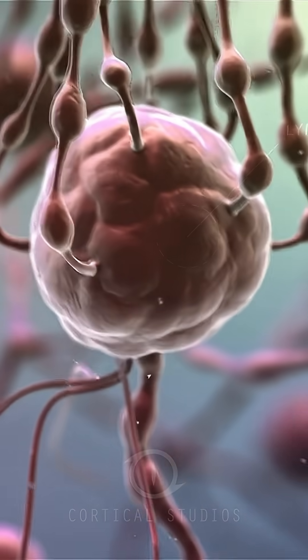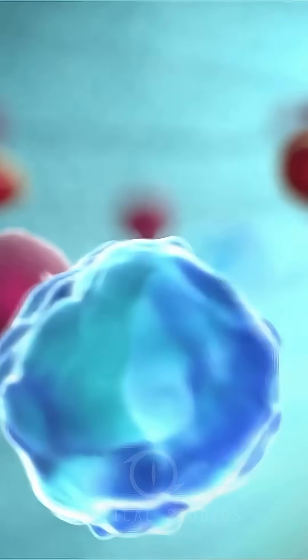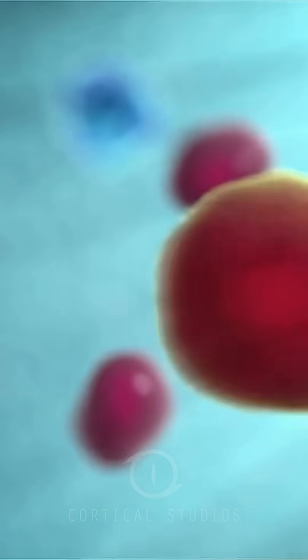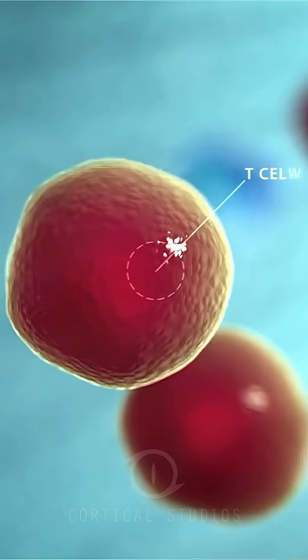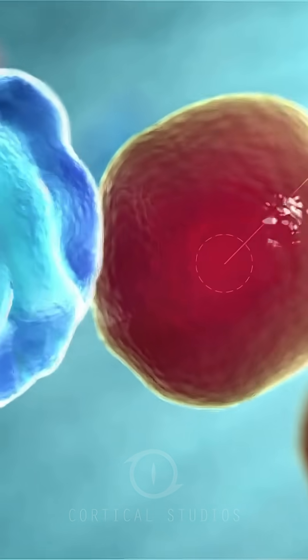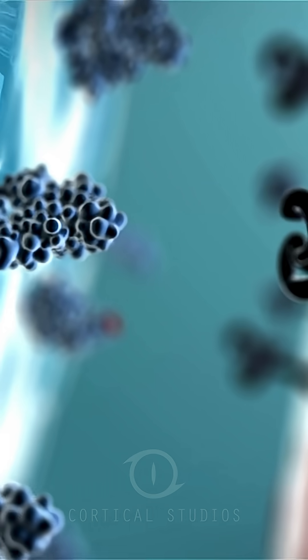The macrophages that have engulfed bacteria at the point of the inflammation come into contact with T cells in the lymph nodes. B cells are also present there. Both are white blood cells that play an important part in the inflammatory process.